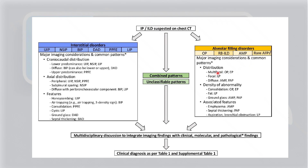For imaging consideration of alveolar filling disorders — depending on whether it is multifocal, unifocal, or diffuse. If the density is more of consolidation, it is either OP or EP. If it is more of fat density, then it is lipoid pneumonia. Ground-glass opacity is mostly seen in AMP and PAP. Emphysema is more associated with AMP. AMP has been introduced as a new terminology replacing DIP — desquamative interstitial pneumonia — because the histology showed smoker's macrophages with no actual desquamation. Septal thickening, aspiration, and bronchial obstruction in lipoid pneumonia can also be seen.